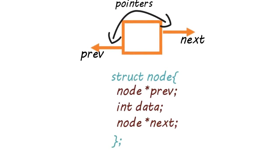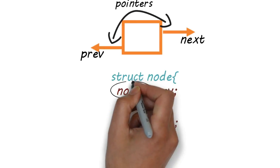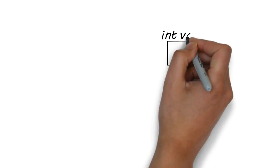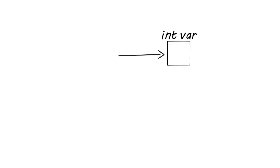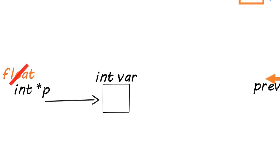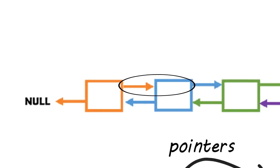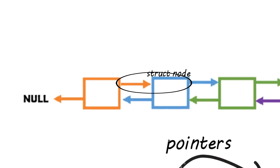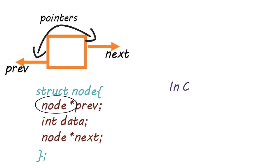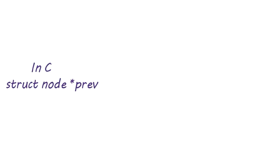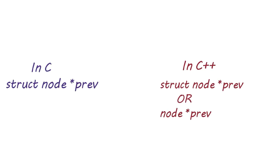You can change the sequence. Why are these pointers of type node? Suppose there is an int variable and we want a pointer to point to that variable — if we use float, it's not valid. We need to use integer. Similarly, these pointers are pointing to a node, and the node is of type struct node. Therefore these pointers are of type node. In C, we write 'struct node* prev', but in C++ you can skip the word struct and directly write 'node* prev'.